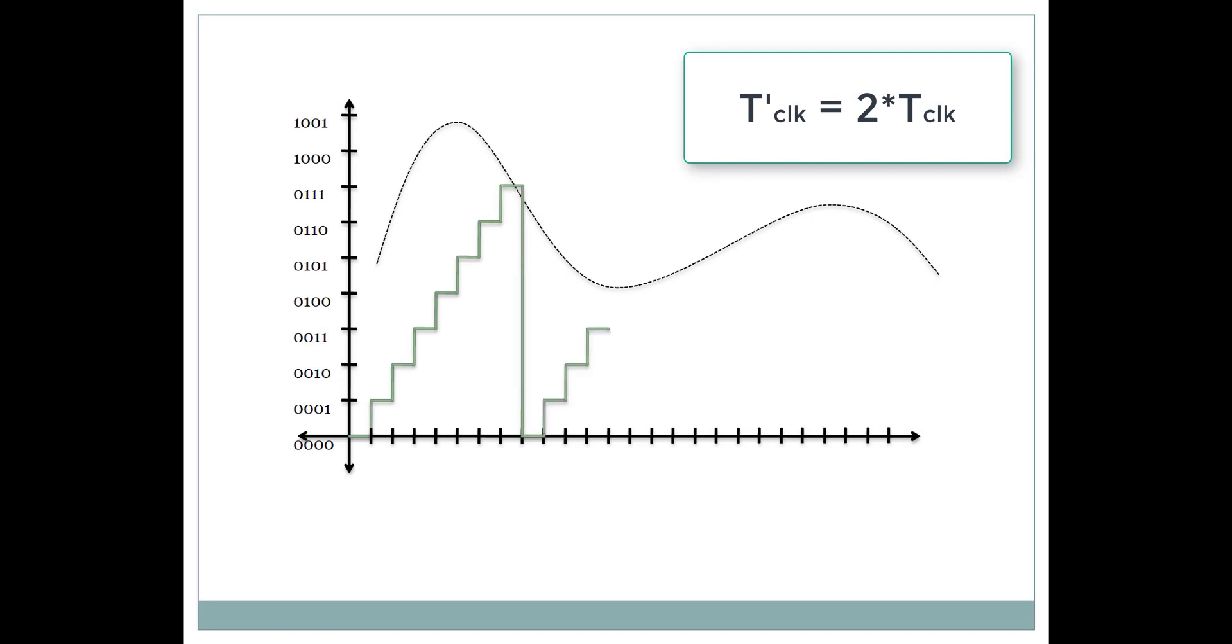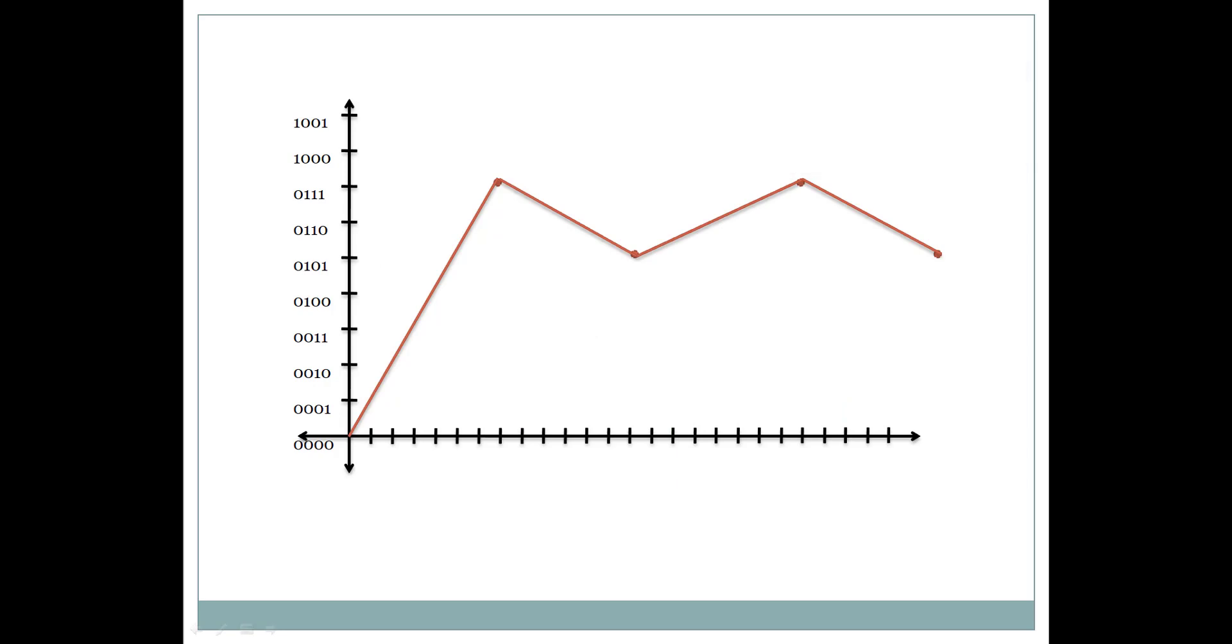As you can see, doubling the frequency increased the number of samples by the same factor and the graph becomes more and more informative. We can increase the clock frequency more and more to get a curve more and more closer to the input voltage.